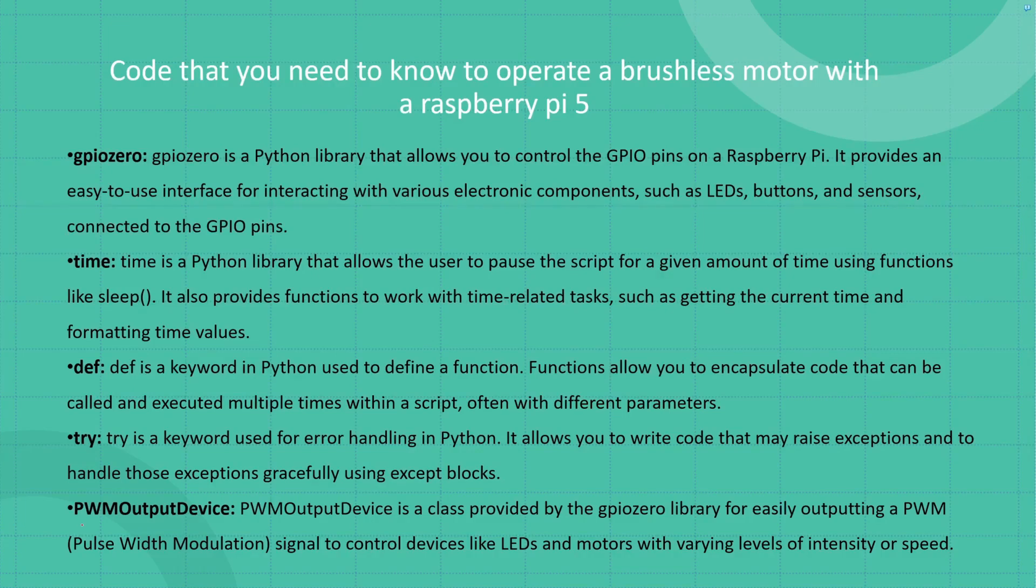And you can see PWM output device. PWM output device is a class provided by GPIO0 library for easy output of PWM, pulse width modulation signal, to control devices like LEDs, motors, with varying levels of intensity or speed.